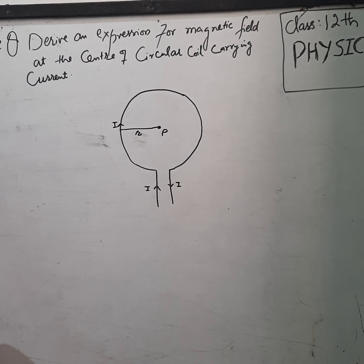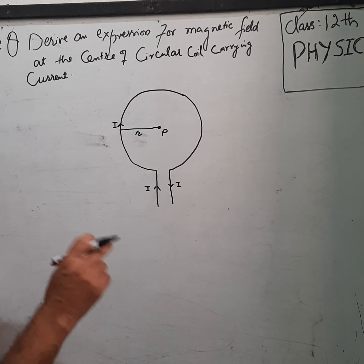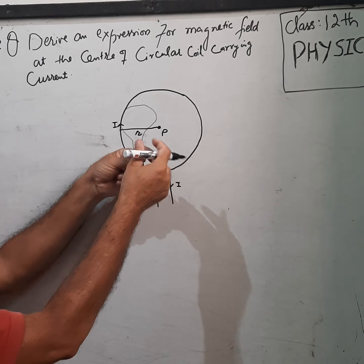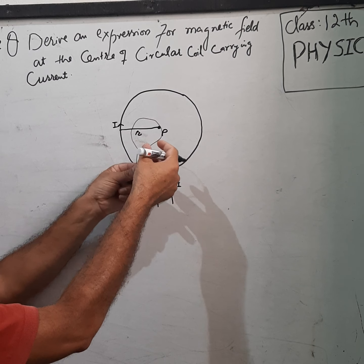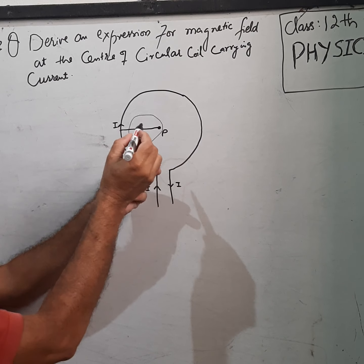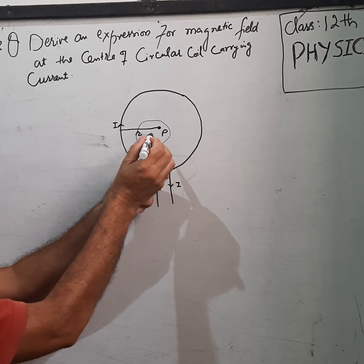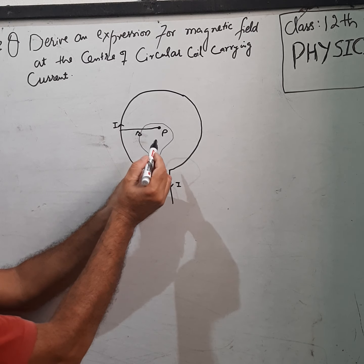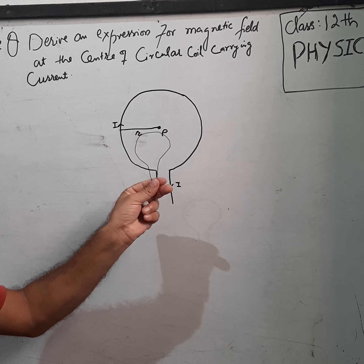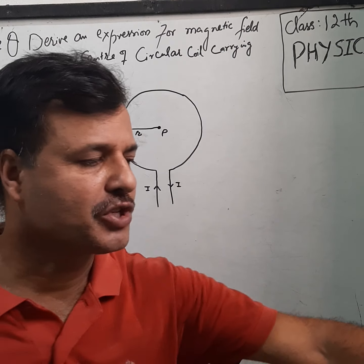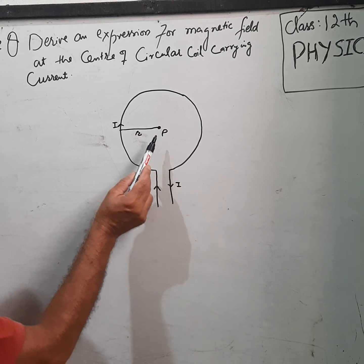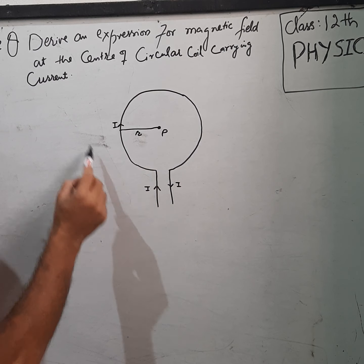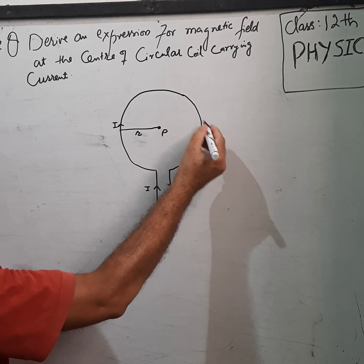Point P पर कितना magnetic field है — यह है question। जैसे यह circular coil बनाई, इस circular coil में current चल रही है, यहाँ पर center P है। Current चलने से magnetic field develop होगा — Point P पर बताइए कितना magnetic field है। We have to derive an expression for magnetic field at the center of the circular coil carrying current.